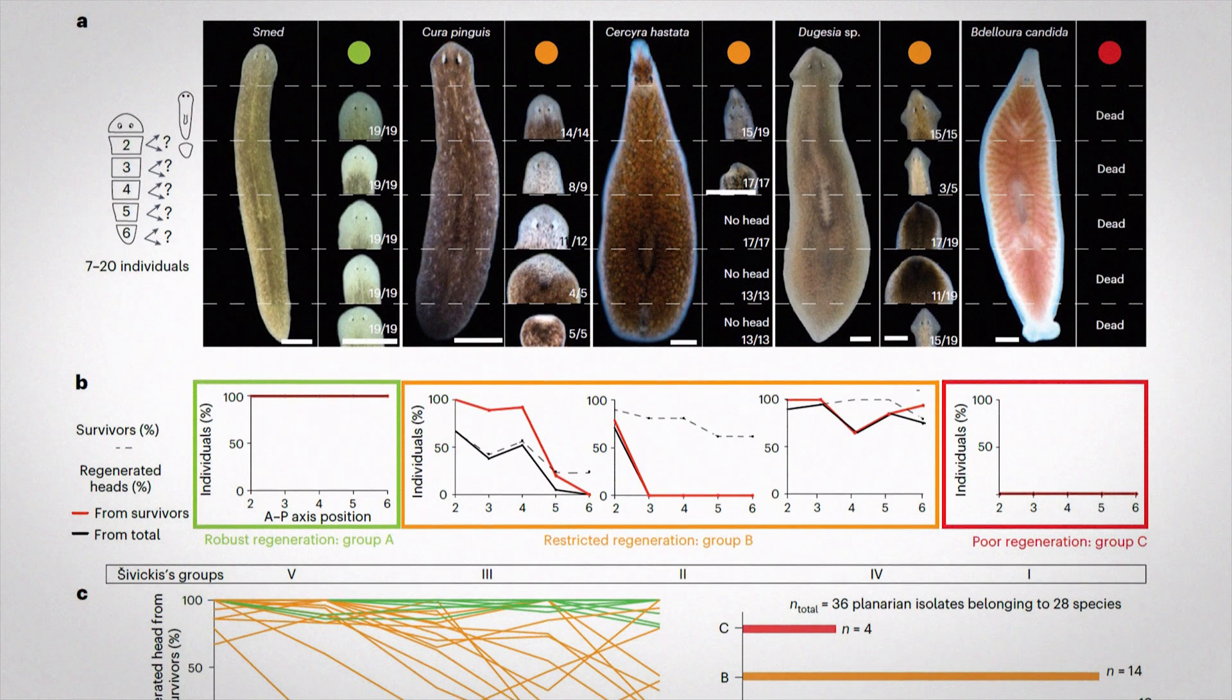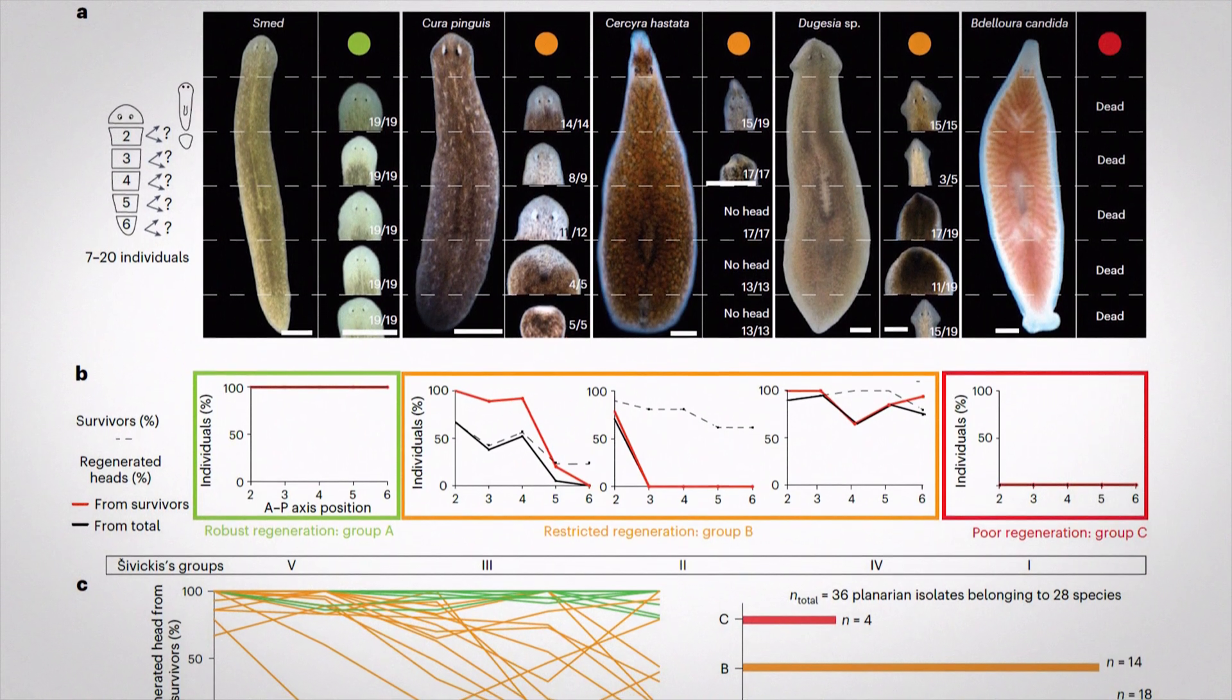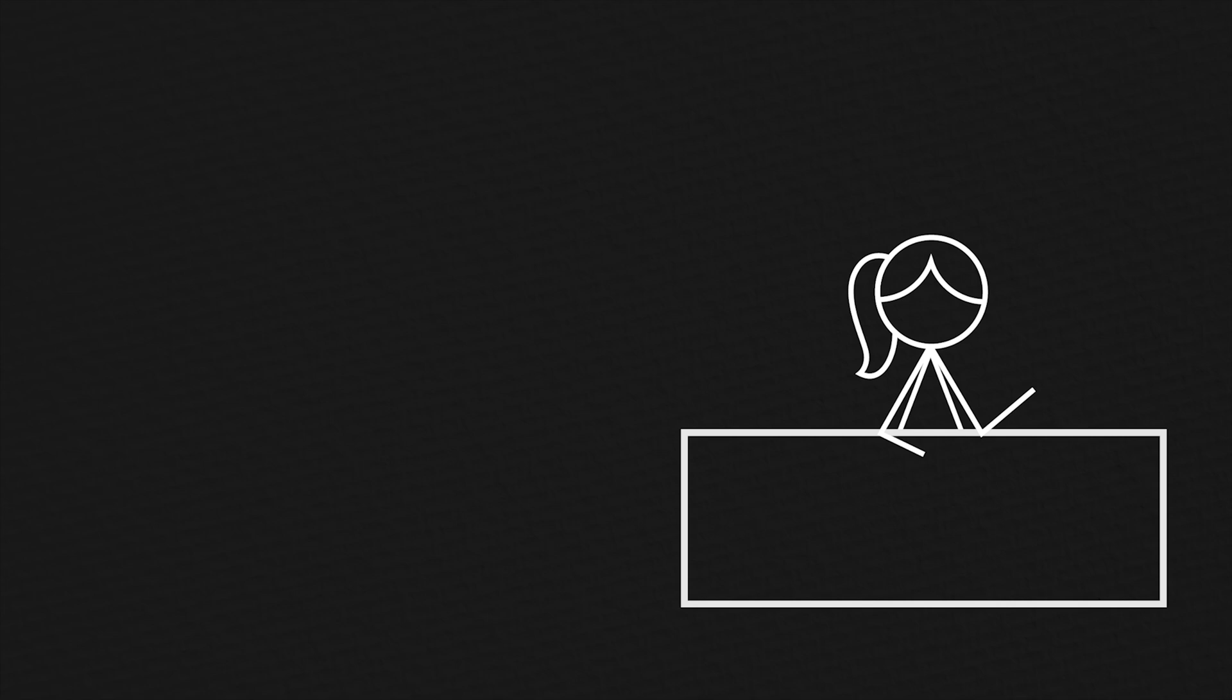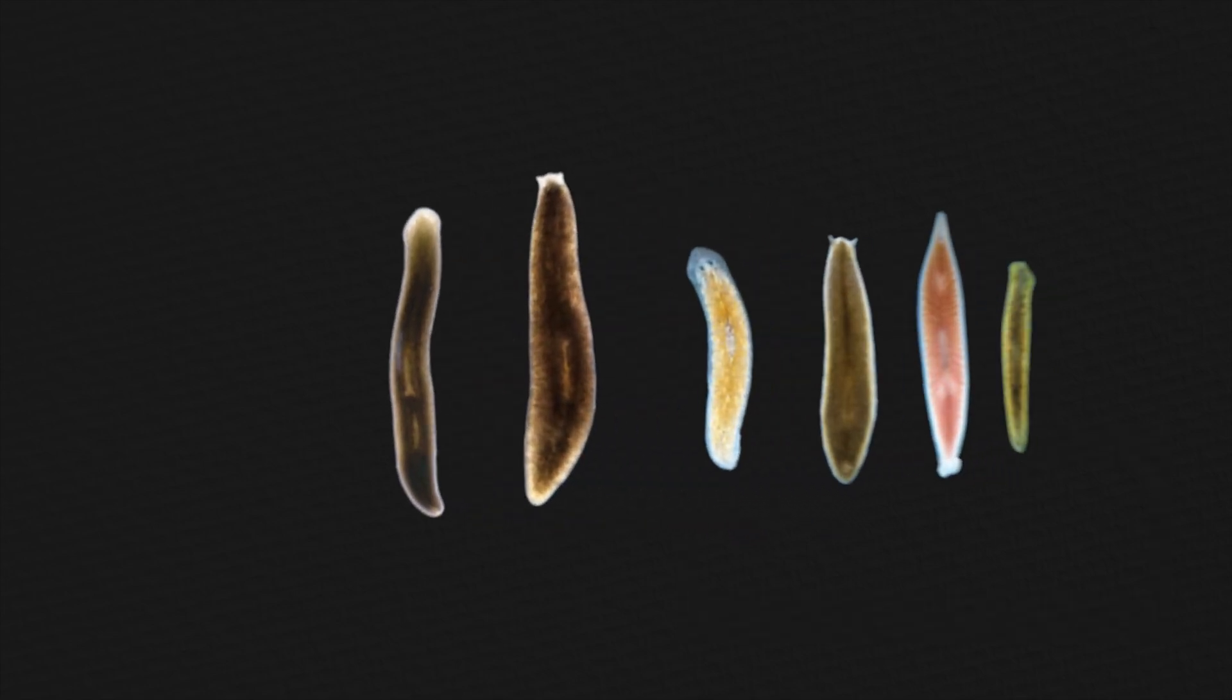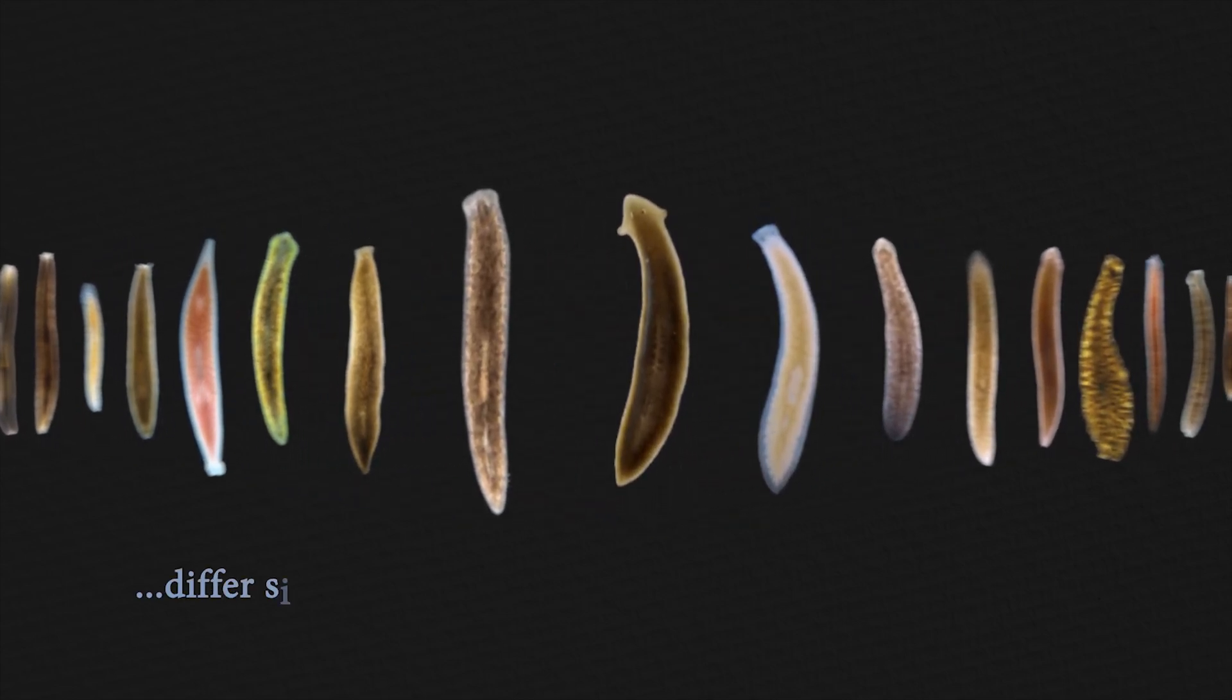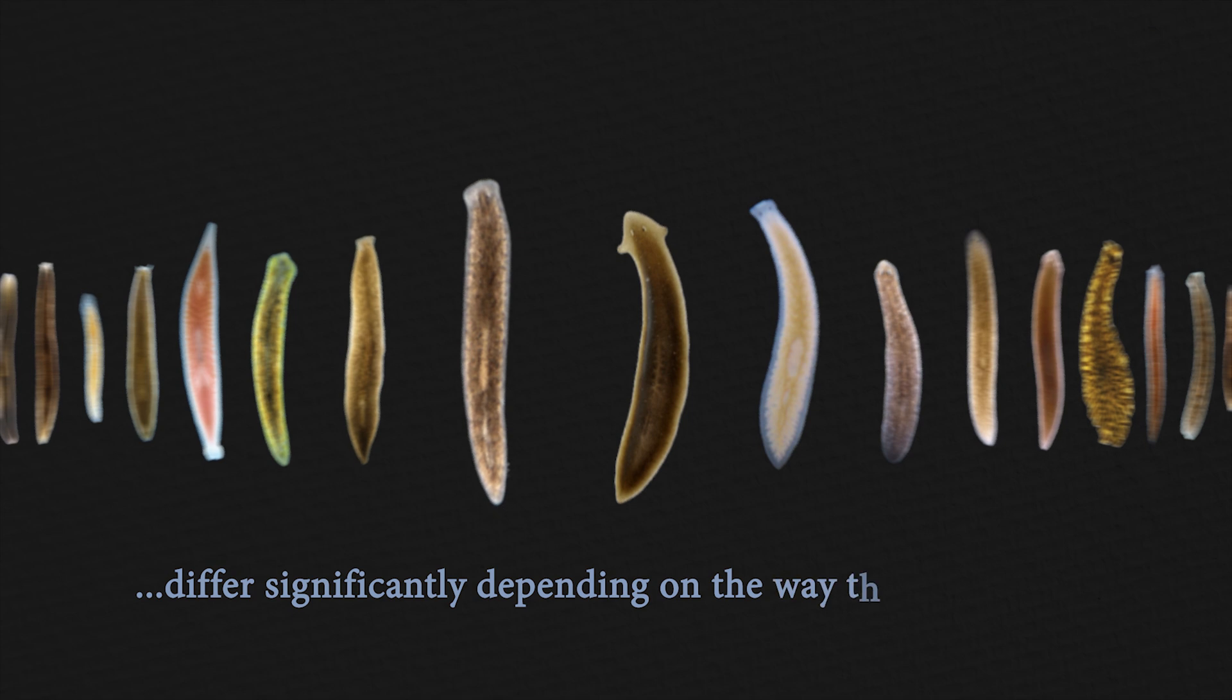Another study published in October this year explores the reason behind the lack of regeneration ability in most animals and humans, while it seems a great survival advantage. The researchers analyzed head regeneration capacities in different planarian species and found that these capacities differ significantly depending on the way they reproduce.